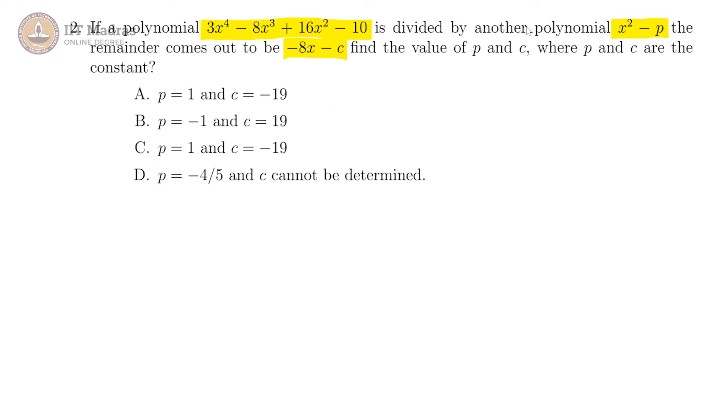They are saying find the value of p and c. So let us do the division then. We have 3x power 4 minus 8x cube plus 16x square minus 10, and here we have x square minus p.